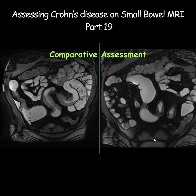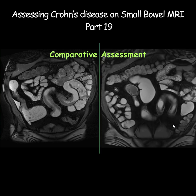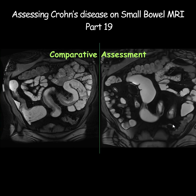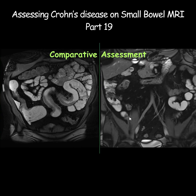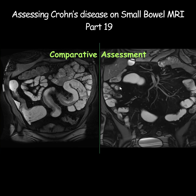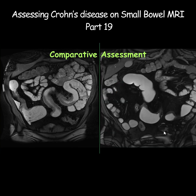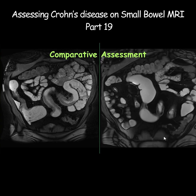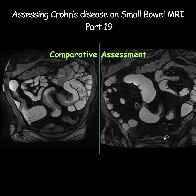On the previous scan there were obviously several segments of abnormal bowel wall thickening, luminal narrowing, and pre-stenotic dilatation with some skip areas in between, but the disease was mostly fibrous stenotic with no significant signs of inflammation.